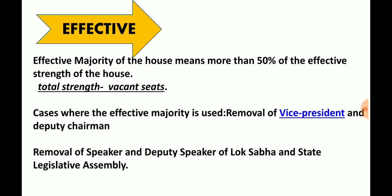So what is the number of seats? The effective strength of the house is the total membership minus vacant seats. Effective seats means more than 50% of the effective strength. This is used for: removal of Vice President, removal of Deputy Chairman of Rajya Sabha, and removal of Speaker and Deputy Speaker of Lok Sabha and State Assembly. Very important.